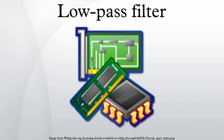Continuous time low-pass filters. There are many different types of filter circuits with different responses to changing frequency. The frequency response of a filter is generally represented using a Bode plot, and the filter is characterized by its cutoff frequency and rate of frequency roll-off. At the cutoff frequency, the filter attenuates the input power by half, or three decibels. The order of the filter determines the amount of additional attenuation for frequencies higher than the cutoff frequency. A first-order filter reduces the signal amplitude by half, or six decibels, every time the frequency doubles, with a power roll-off approaching 20 decibels per decade at high frequency.